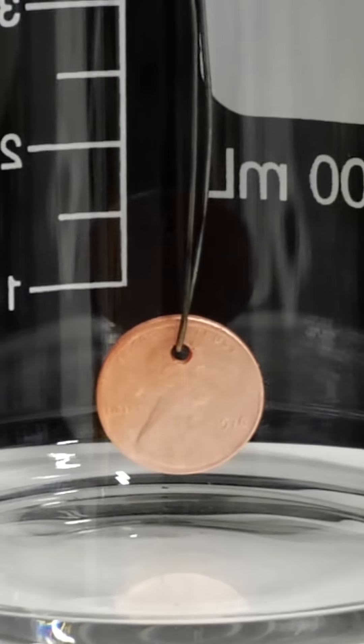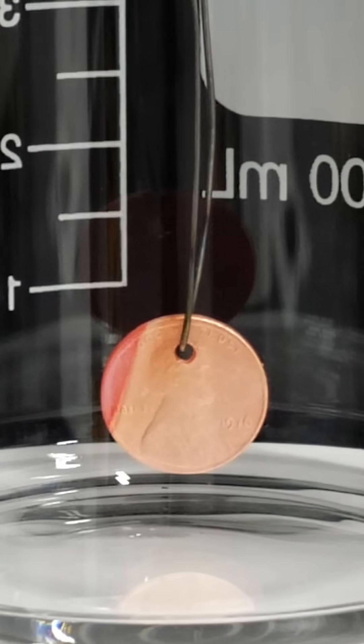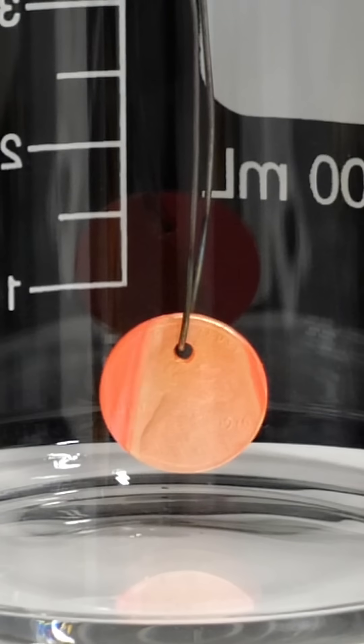At first, it didn't look like much was happening, but then the edges started turning red. This was happening because the hot copper in the penny was catalyzing a reaction between the acetone vapors and the oxygen in air.